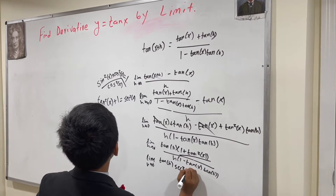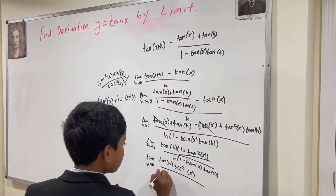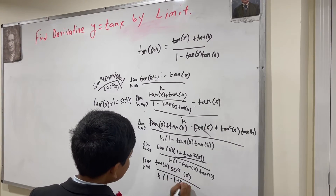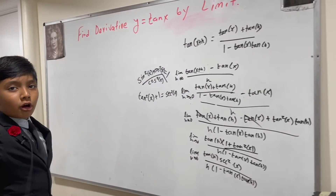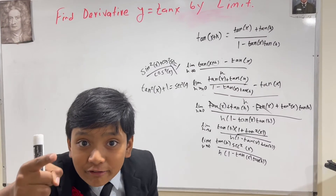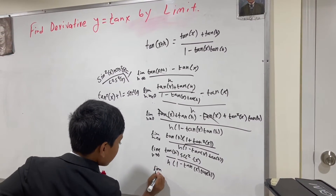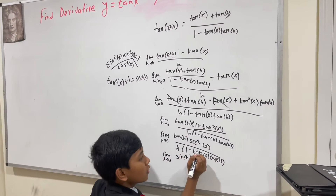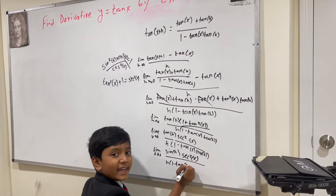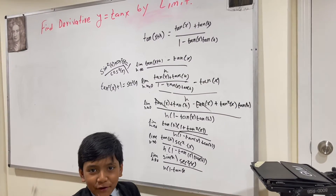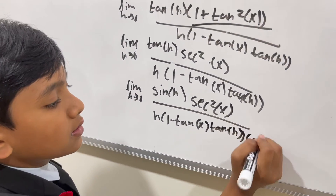So we have tan h times secant squared of x over h times (1 minus tan x tan h). Now we're going to spice up the denominator. You know how tan of x equals sin of x over cosine of x? Well, that's true with tan of h too. So we're going to rewrite this as sin of h over cosine of h, giving us sin of h times secant squared x over h times (1 minus tan of x times cosine of h).